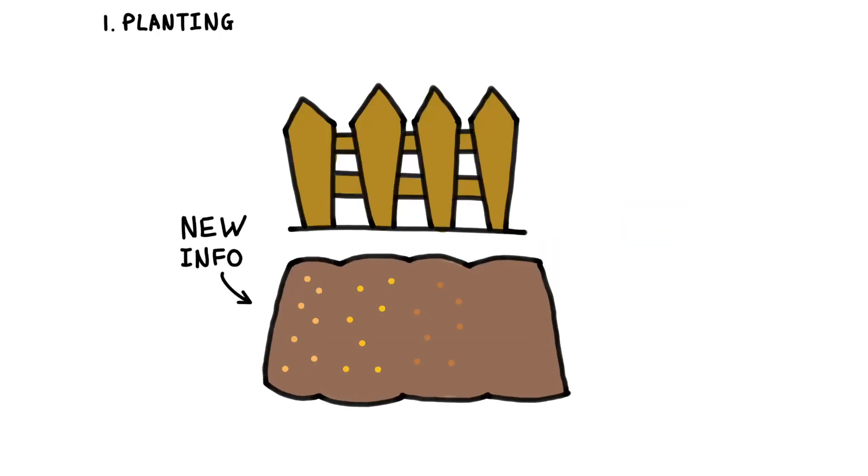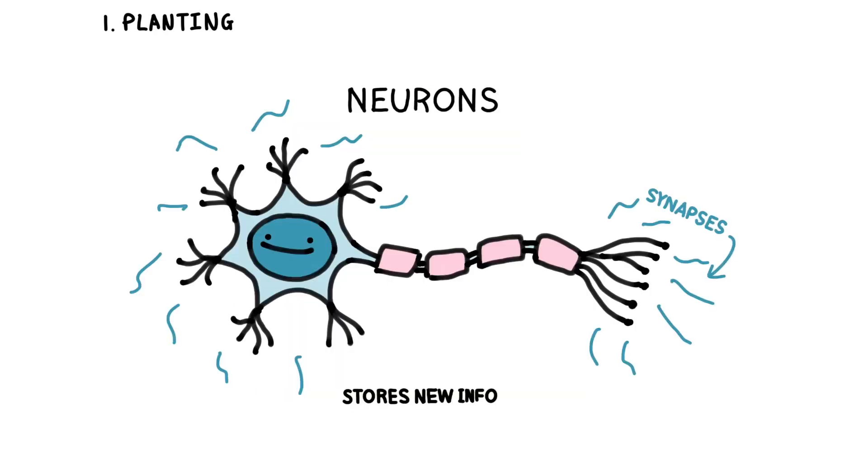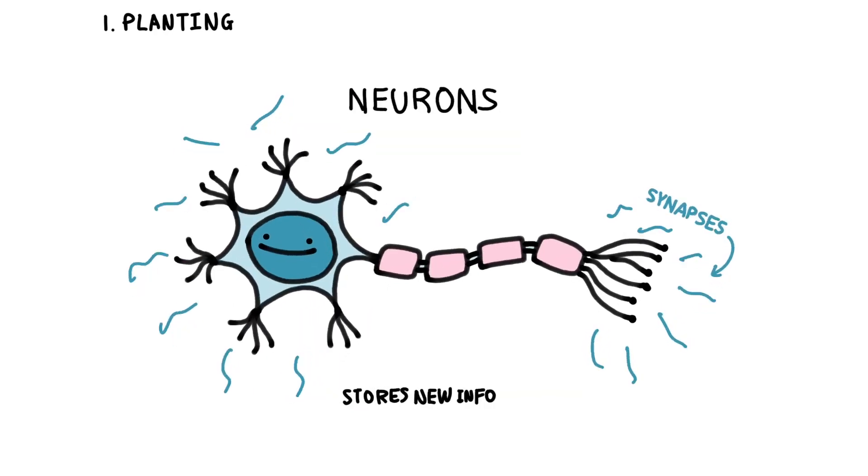Step 1 is planting the seeds. In our brain garden, seeds represent new information. Our brain forms connections between special nerve cells called neurons to store this information. These connections, called synapses, are like planting seeds in fertile soil.